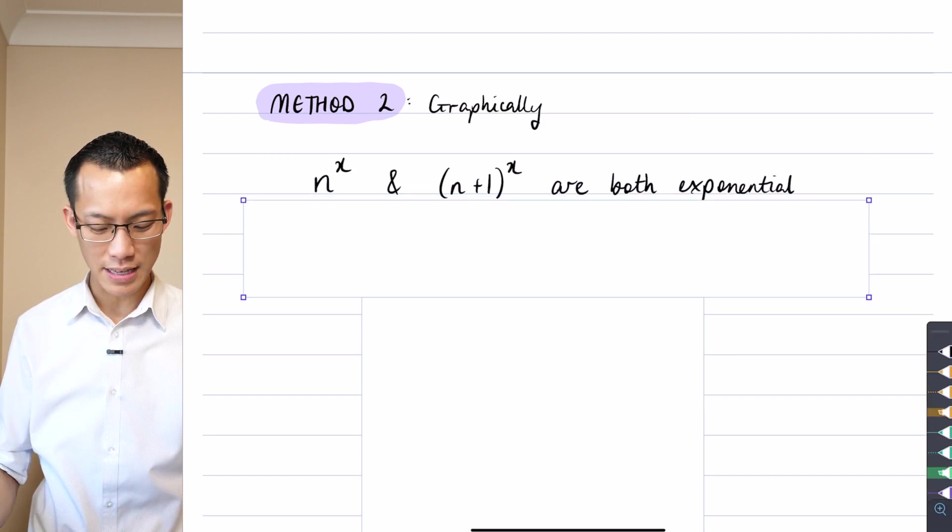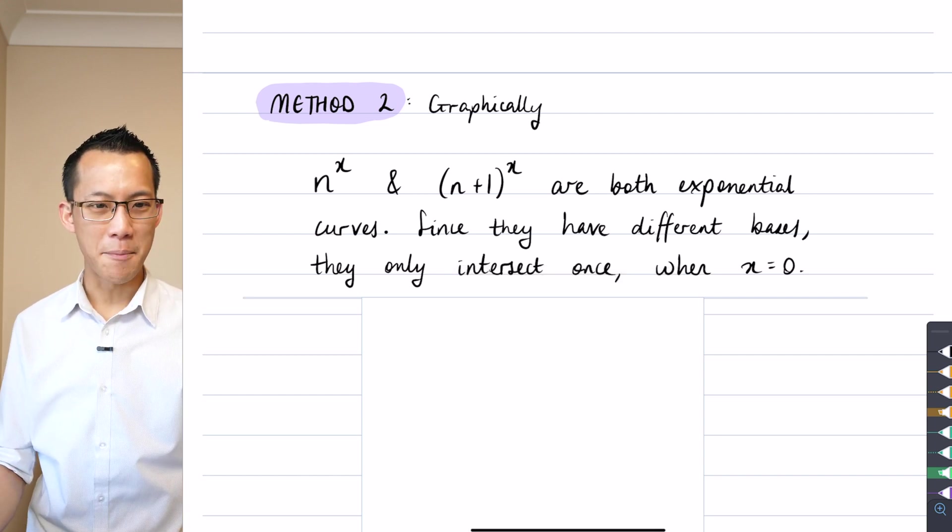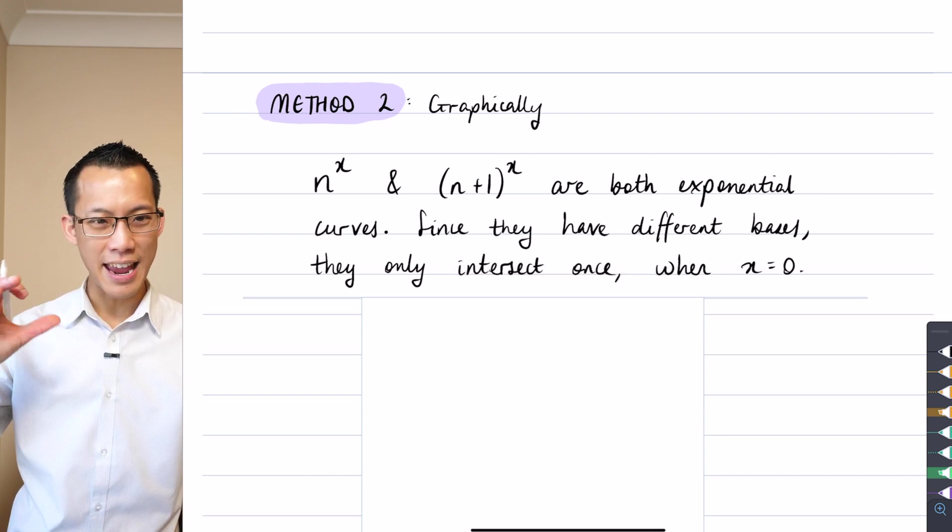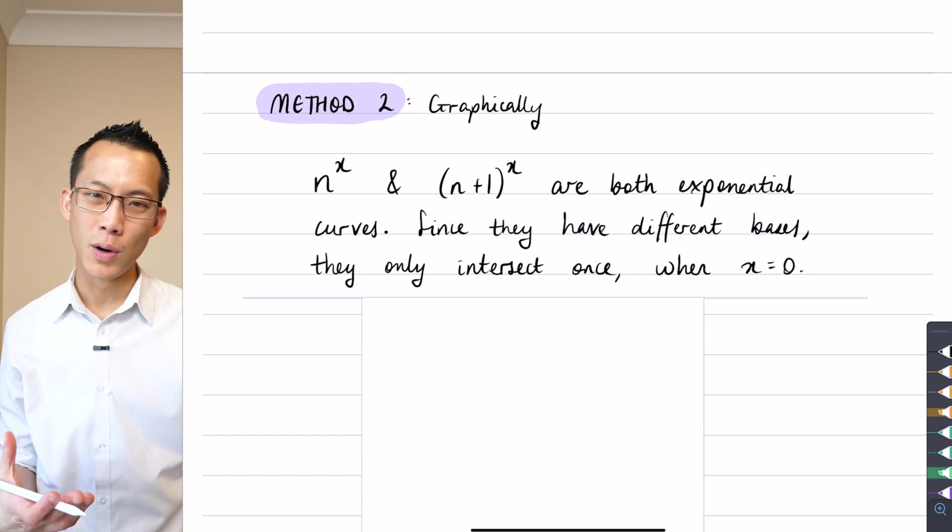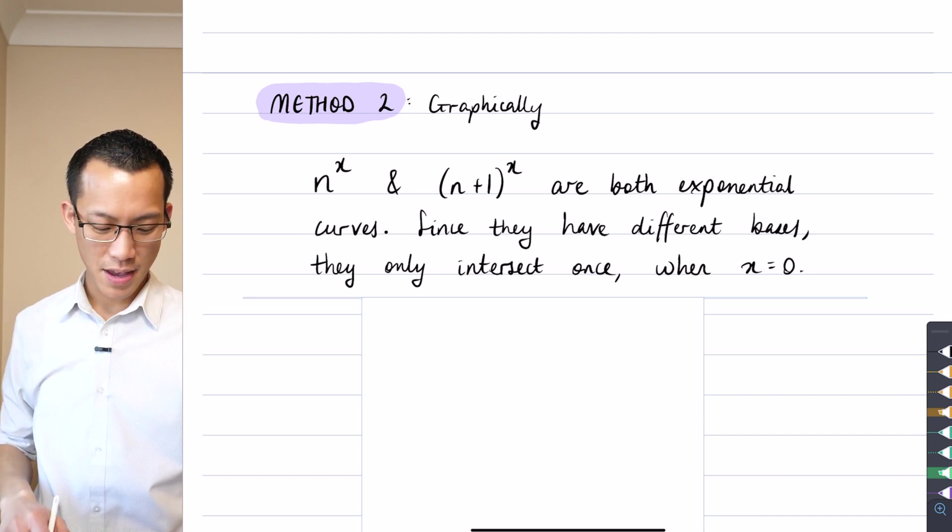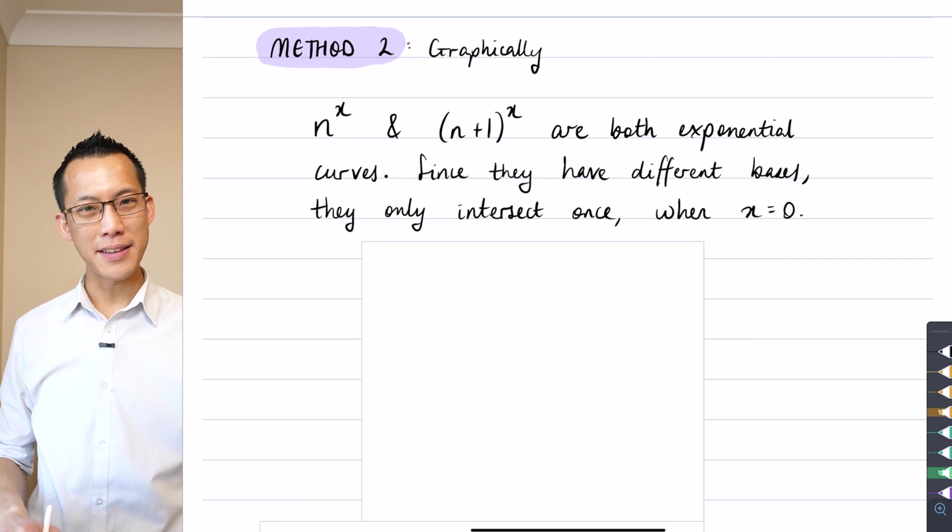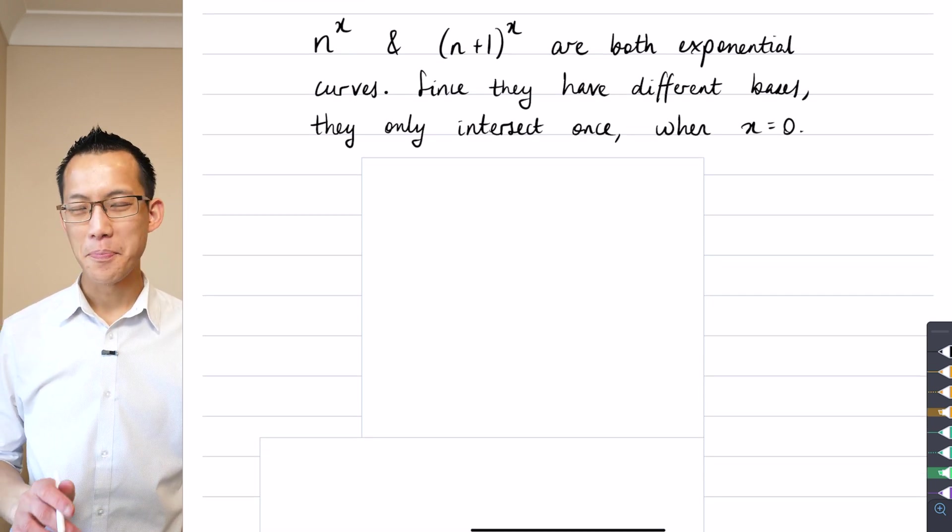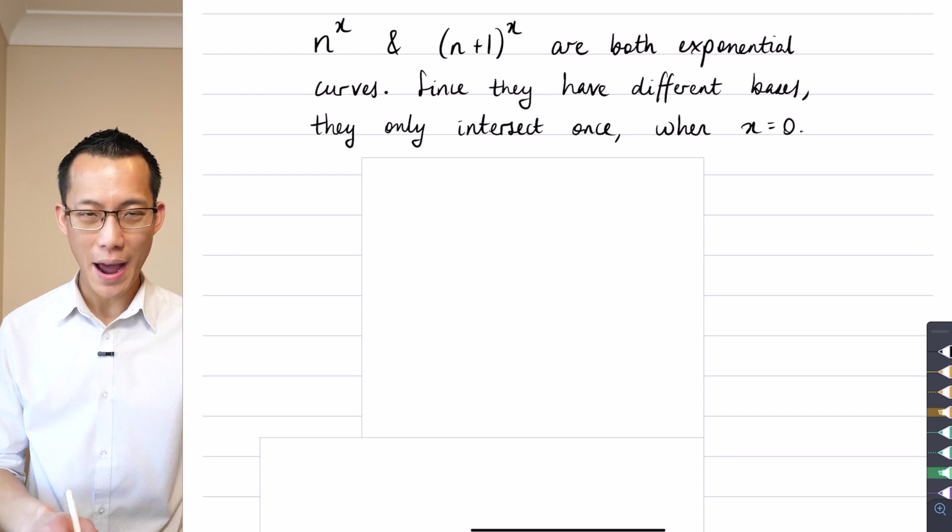I'm going to think about these two as exponential curves, because the n is going to be constant and you're raising it to a power so it gets bigger and bigger, and that n plus one is also constant and then you raise it to some power. They're both exponential curves, but being that they have different bases, I'm going to prove this visually in a second, they can only intersect once and that's at their y-intercept.